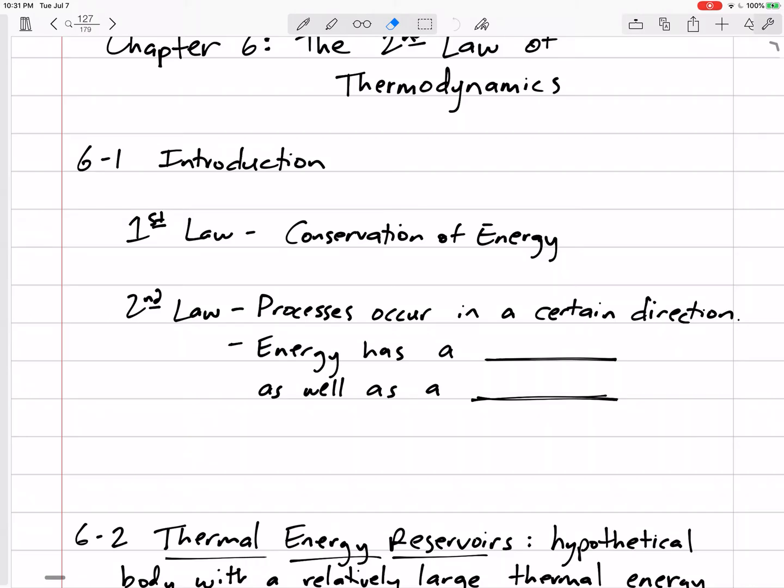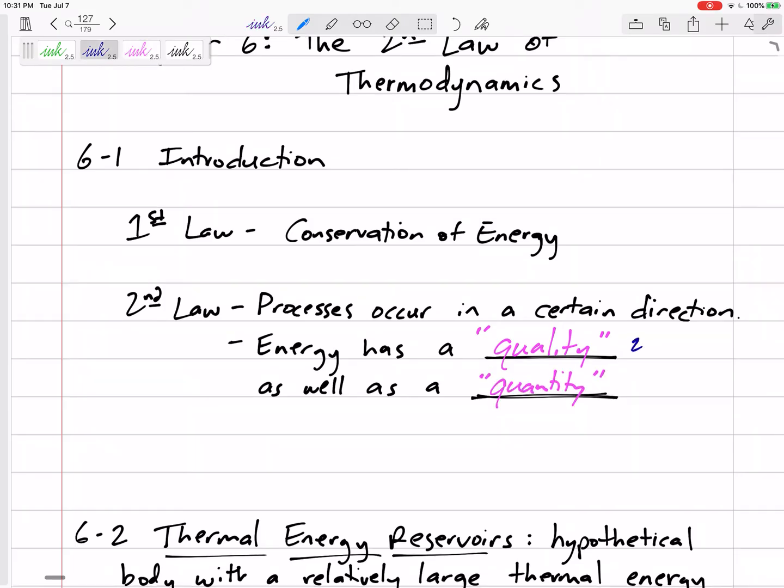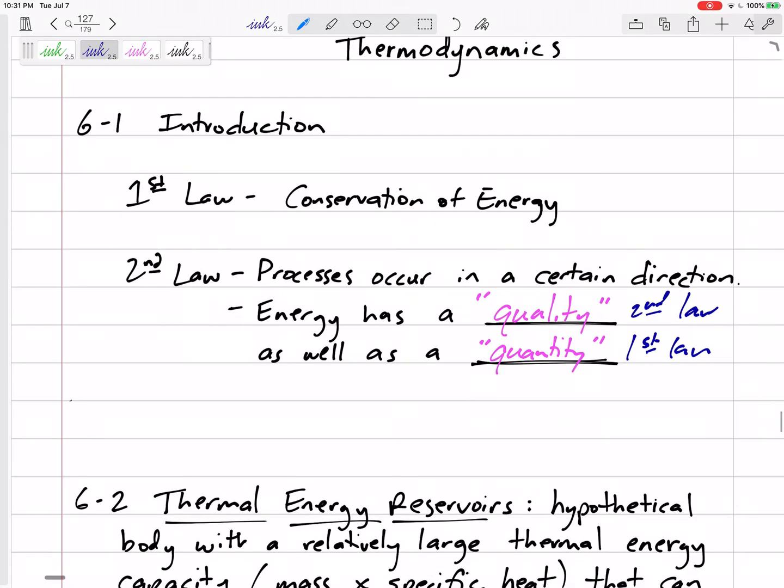Not only does everything have to add up, but it needs to go in a certain direction. Two things here: energy has a quality in entropy as well as a quantity, right? So quality is going to be the second law, quantity is going to be the first law.